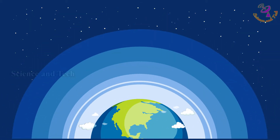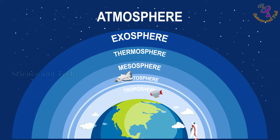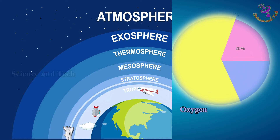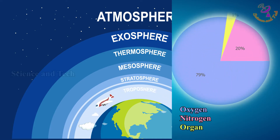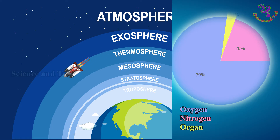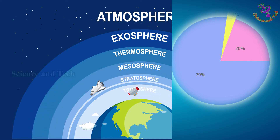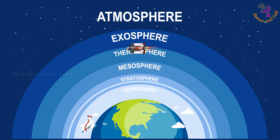In general, our atmosphere contains a variety of gases. There are different types of gases like oxygen, nitrogen, and argon. In each of these gases, the molecular density varies. For example, if the molecular density of oxygen is high, the molecular density of nitrogen and other gases is low. The hot air balloon flies by varying the density of these molecules.